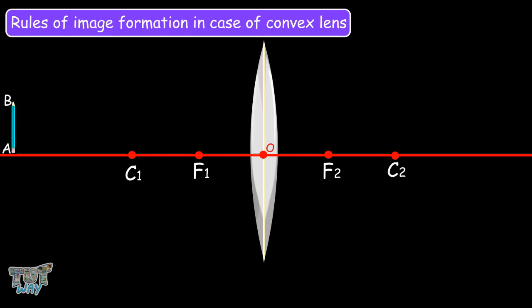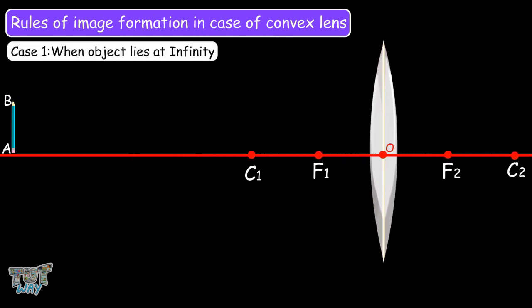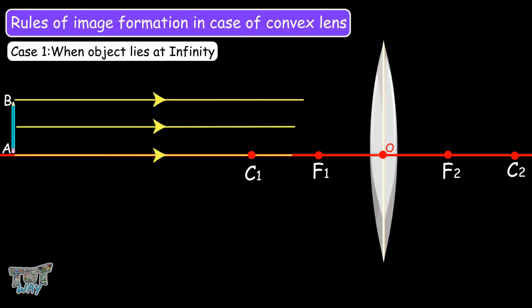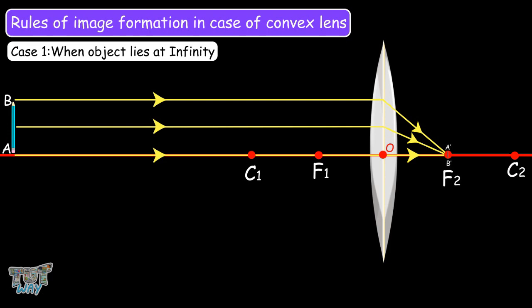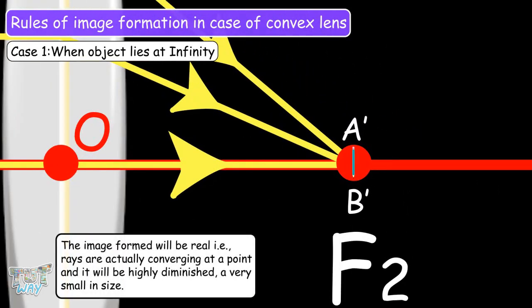Our object will be called AB. The first case is when the object is placed at infinity, a great distance from the lens. In this case, rays coming from the object AB will be parallel to the principal axis and will intersect at F2. All rays refract and converge to the principal focus on the other side of the convex lens. The image formed at F2, called A'B', will be highly diminished, real, and inverted.